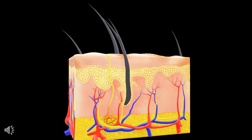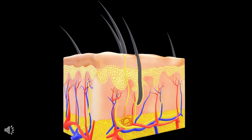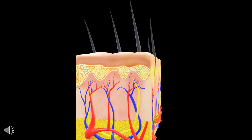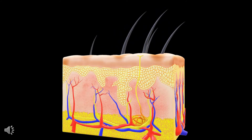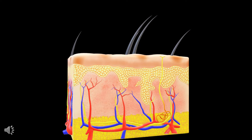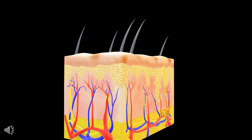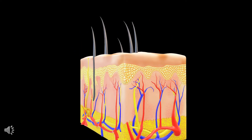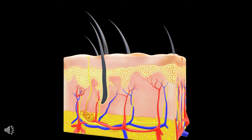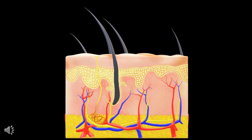Today we will be learning about the transverse section (TS) of human skin. Skin is the largest organ of the body with a total area of about 20 square feet. The functions of human skin include protecting us from microbes and the elements, regulating body temperature, helping in sensations such as touch, heat and cold, and playing a very important role in excretion in humans.